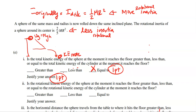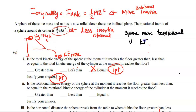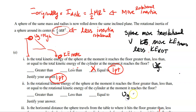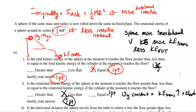Second sub-question: is the rotational kinetic energy of the sphere at the floor greater than, less than, or equal to the cylinder's? The sphere has less rotational inertia, so it is easier to get rotating — meaning it will have more translational velocity. Since UG is constant and KE translational increases, KE rotational must decrease. So the sphere's rotational KE is less than the cylinder's.